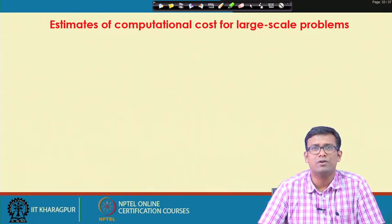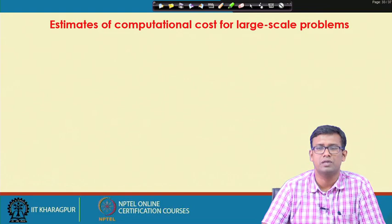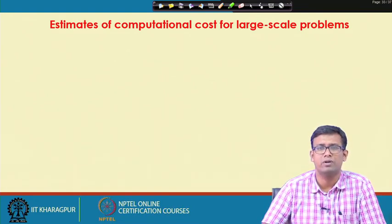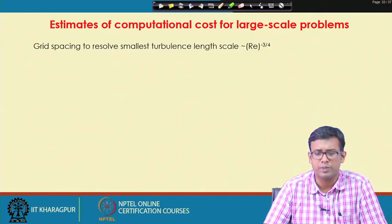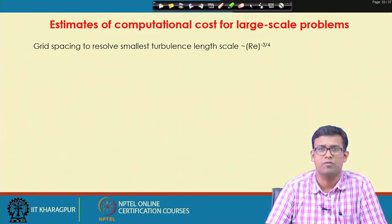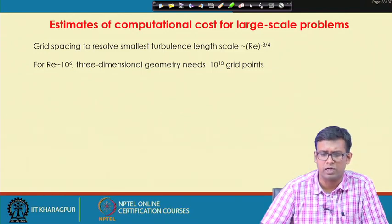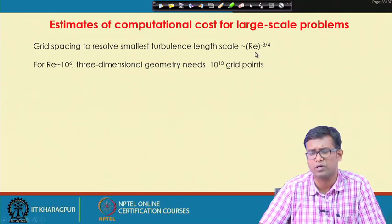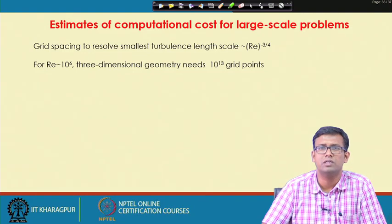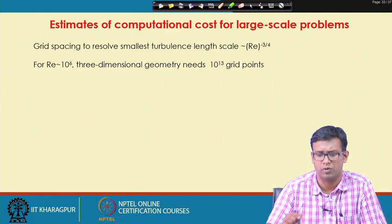We will estimate the computational cost for a large-scale problem to assert that parallel computing is necessary. For a turbulent flow, the grid spacing required for the smallest turbulent scale goes as Reynolds number to the power 3/4. If Reynolds number is 10^6, for a 3D grid it needs 10^13 grid points. In one time step, solving the matrix requires on the order of 10^13 floating point operations, since even the fastest solver has operation count of order n.